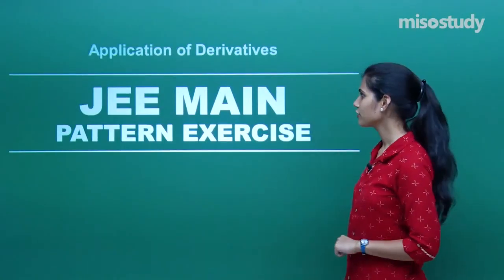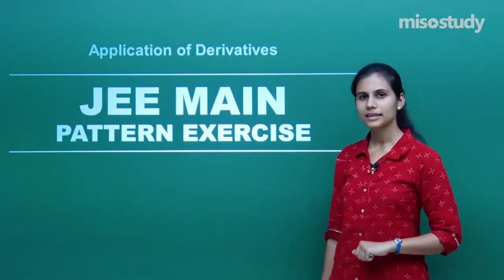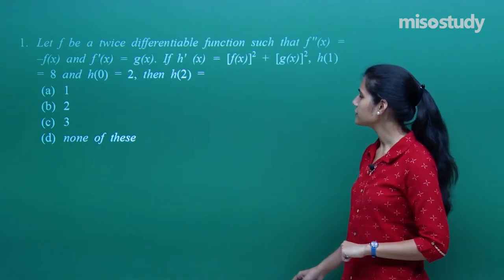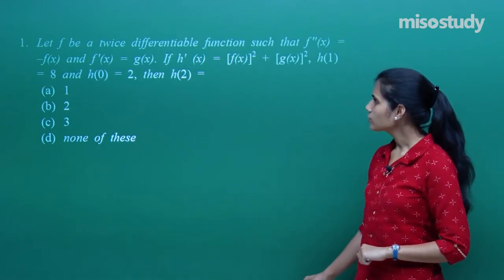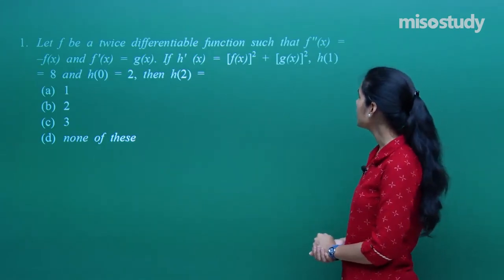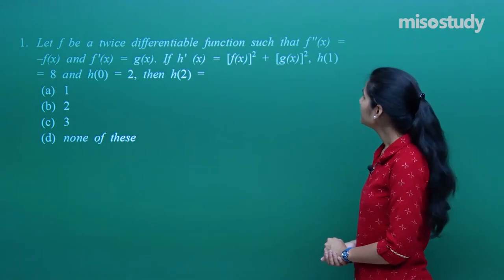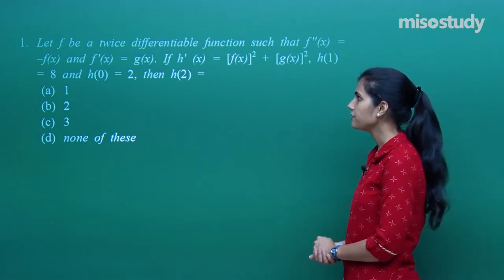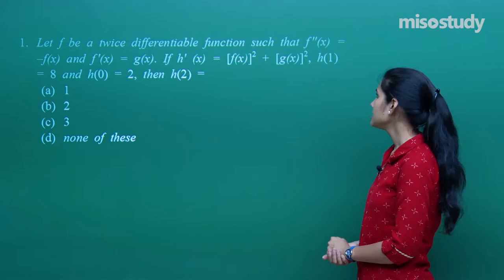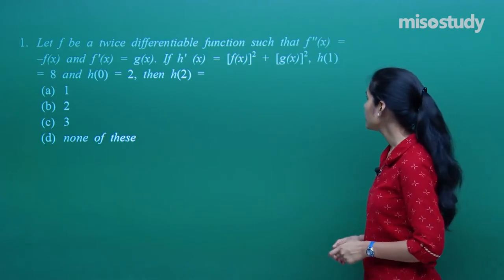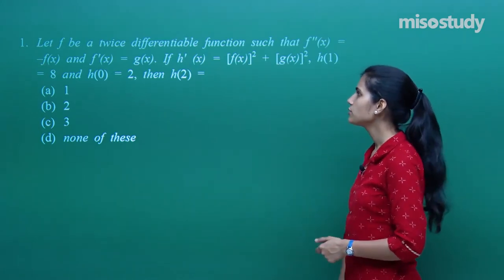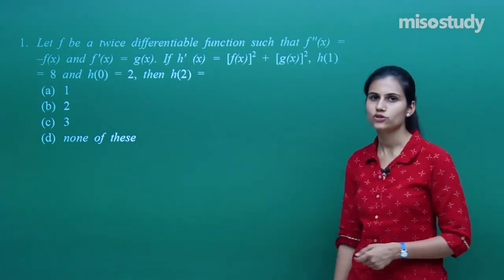Let's begin the discussion over the JEE Main pattern exercises for the chapter Application of Derivatives. The first question says: let f be a twice differentiable function such that f''(x) = -f(x) and f'(x) = g(x). If h'(x) = [f(x)]² + [g(x)]², h(1) = 8, h(0) = 2, then what is h(2)?